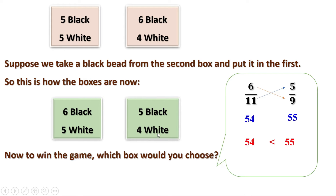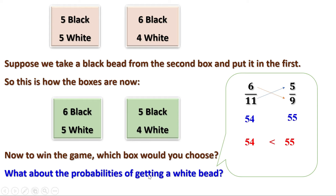Because in the second box the total number of beads is also less. In the first box the probability is 6 by 11, and in the second box the probability of getting a black bead is 5 by 9. That means the total also matters. Now, what about the probability of getting a white bead?